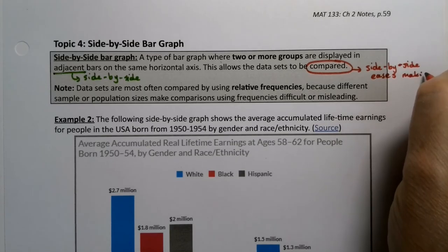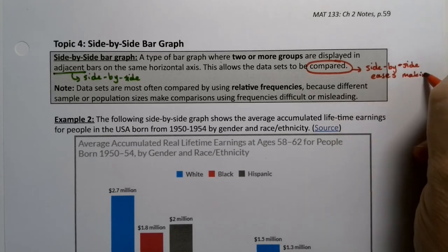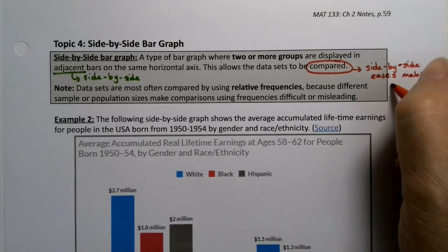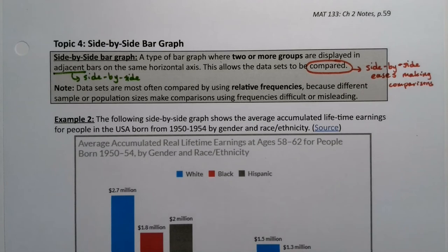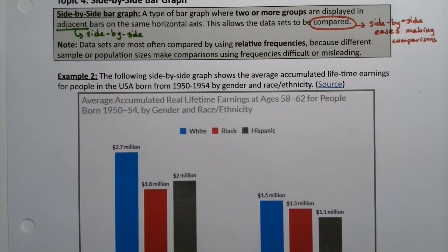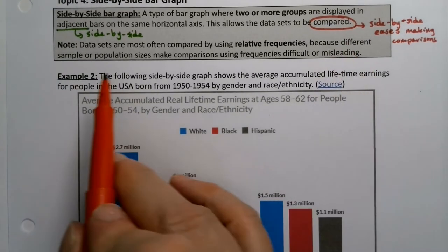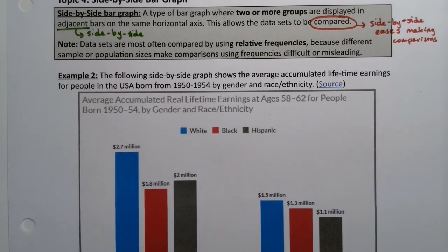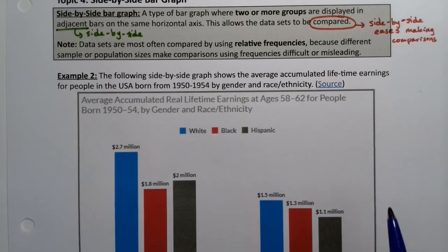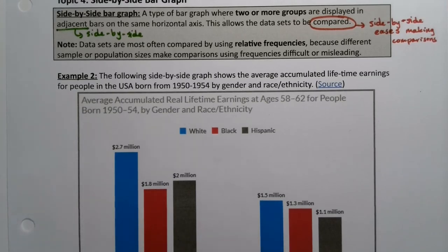Side-by-side graphs ease making comparisons. The most frequently compared values are relative frequencies, because that way, if groups have different population sizes, it's fair to make the comparisons. Using raw frequencies is often difficult or misleading, so just be aware that we are usually doing relative frequencies. However, this particular example is using frequencies, so just keep that in mind.